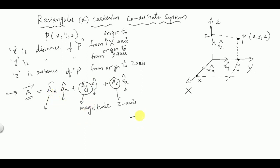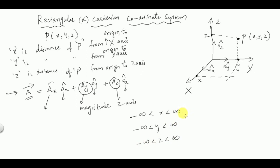The limits for the coordinates in the rectangular coordinate system are: minus infinity less than x less than infinity, minus infinity less than y less than infinity, and minus infinity less than z less than infinity. So x, y, and z should have finite values in order to represent a point on the rectangular coordinate system.